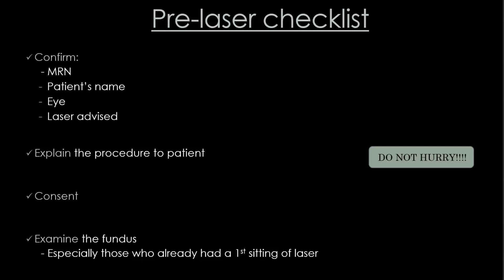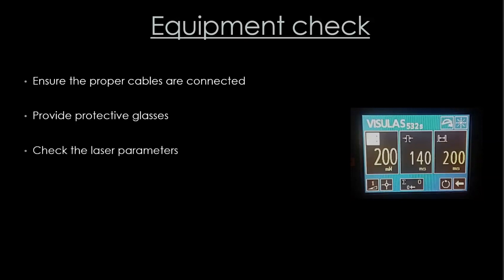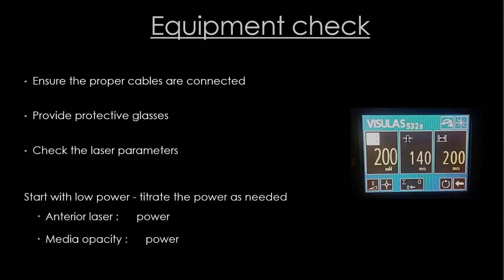Once all this is out of the way, check the equipment: ensure all cables are connected, provide protective glasses to everyone in the room, and then set your parameters. Always start with the lowest parameter settings and titrate as needed. For example, when moving from the posterior to the anterior retina you may need to decrease the power, and when there is media opacity you may need to increase the power.